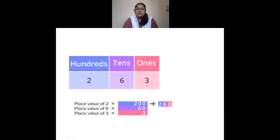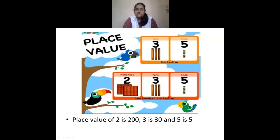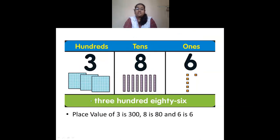In 35, 3 is in tens place so its place value is 30, and 5 is in ones place so its place value is 5. In 235, 5's place value is 5, 3 is in tens place so 30, and 2 is in hundreds place so 200. In 386, 6 is in ones place, 8 is in tens place with value 80, and 3 is in hundreds place with place value 300. So the number is 386.